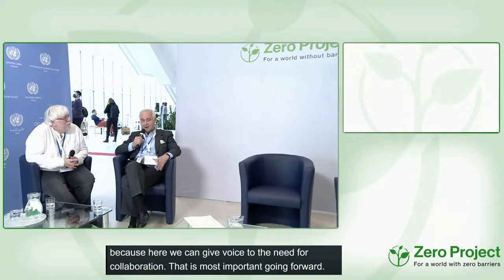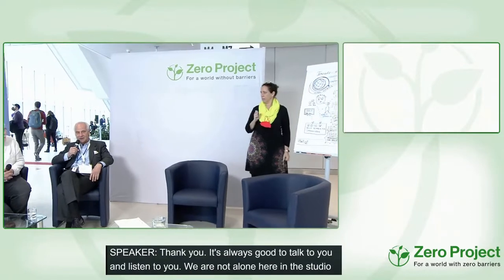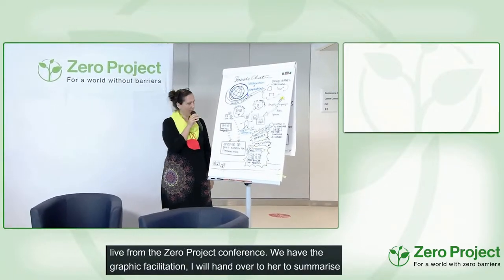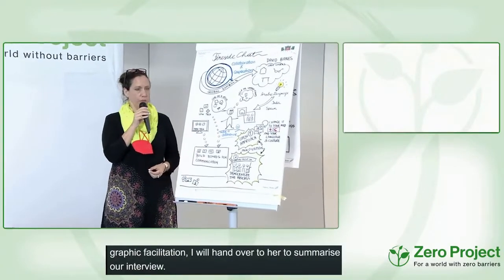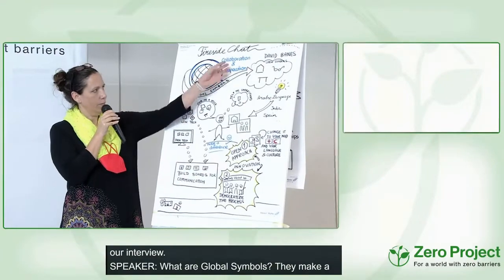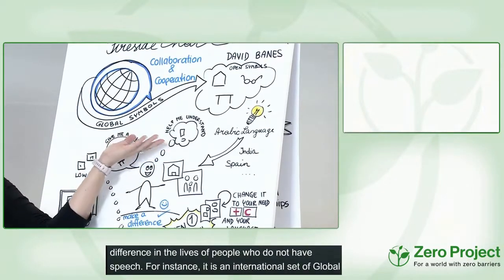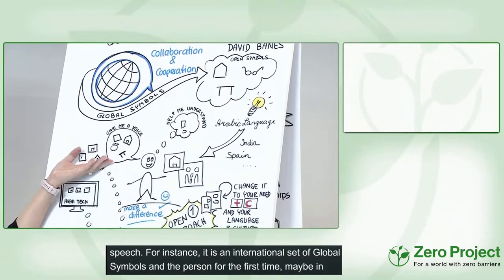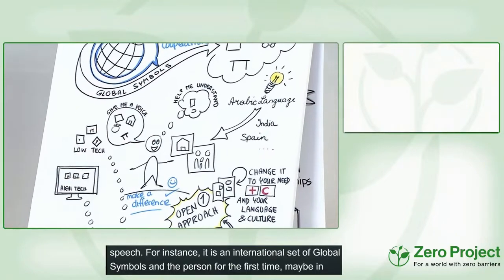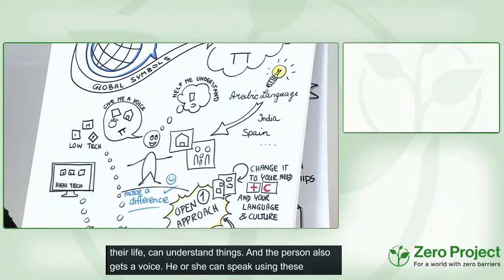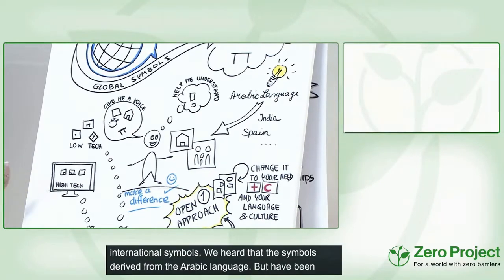Thank you, David. It's always good to talk to and listen to you. We are live from the Zero Project conference with Petra Blitschke, who is doing graphic facilitation, and I hand over to her to summarize our interview. What are Global Symbols? They make a difference in the lives of people who do not have speech. It's an international set of global symbols, and the person — for the first time maybe in their life — can understand things and gets a voice, so he or she can speak using these international symbols.